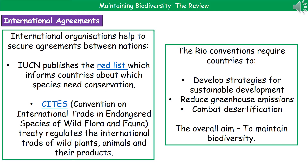One of the steps we can take is to have international agreements. There are a few international organisations that help secure these agreements between nations. One of these is the IUCN, and they publish something called the Red List. This is a list of all species, categorised as endangered, critically endangered, extinct, etc., and it informs countries about which species need conservation.